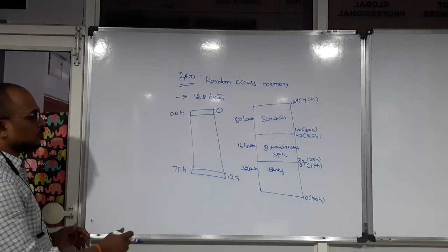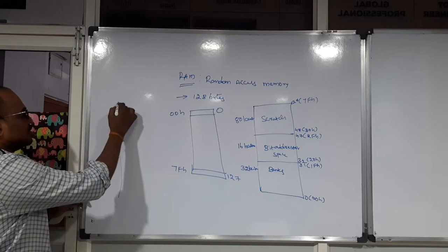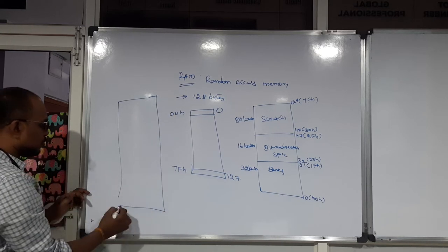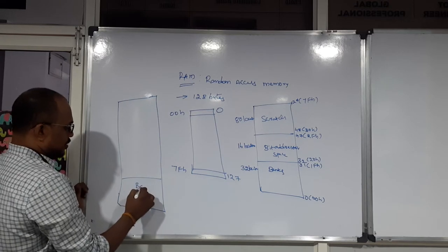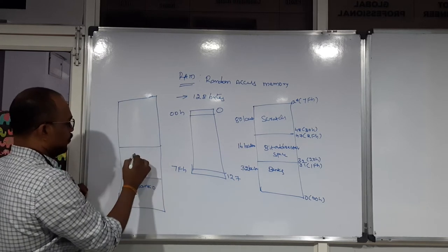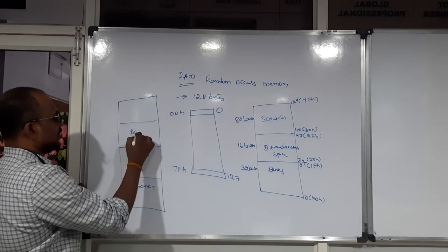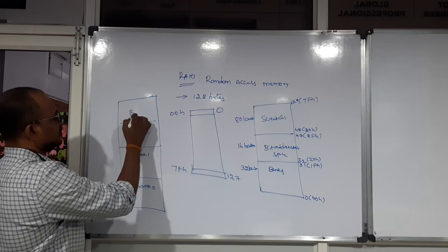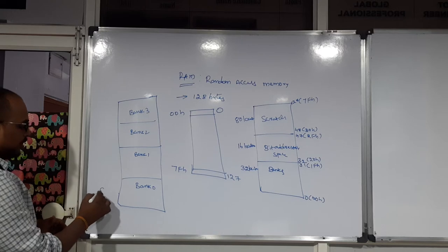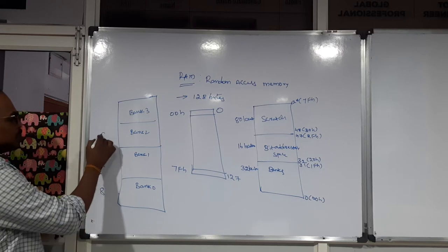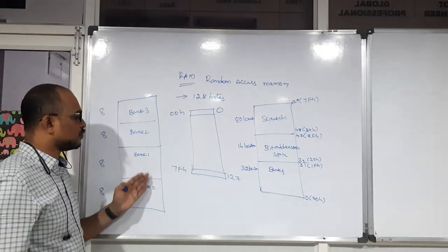Coming to the Banks in more detail: there are four banks from the microcontroller — Bank 0, Bank 1, Bank 2, and Bank 3. Each bank takes eight locations of memory, and eight times four equals 32, so the 32 locations are divided into four sections as four banks. The individual address ranges are: 0 to 7, 8 to 15, 16 to 23, and 24 to 31.